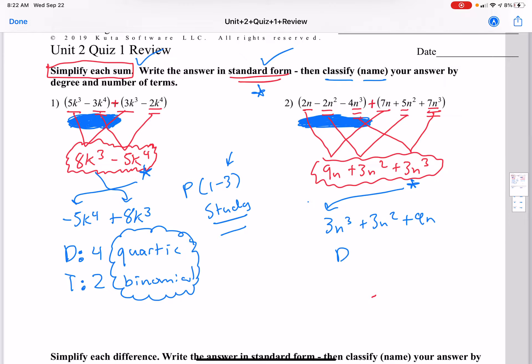Next, let's look at the degree here. The degree is the biggest exponent, which is 3, and there are 3 terms. So that's a cubic trinomial.